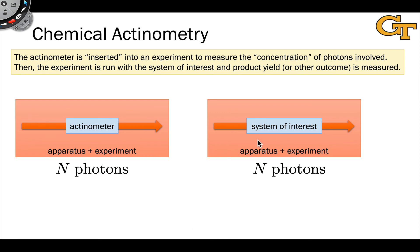A number of times to ensure reproducibility and to make sure that, for example, the time delay when we're switching out the actinometer for the system of interest or any other subtle changes we're making don't actually change the number of photons impinging on the sample in a profound way.